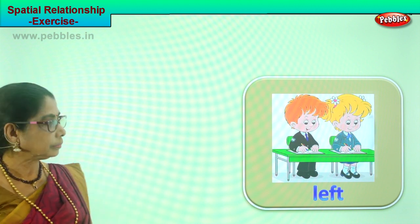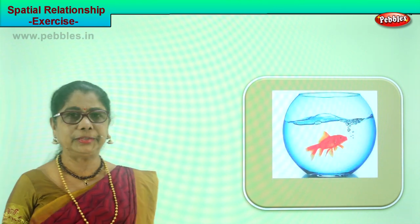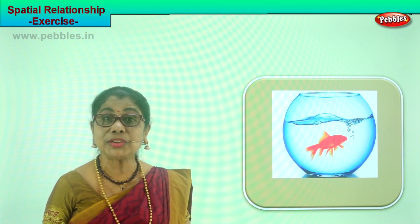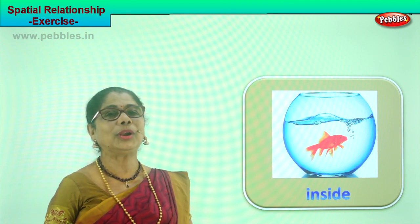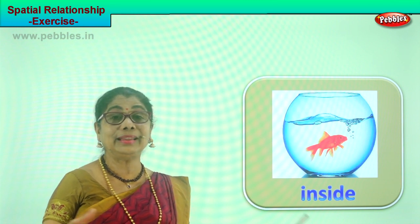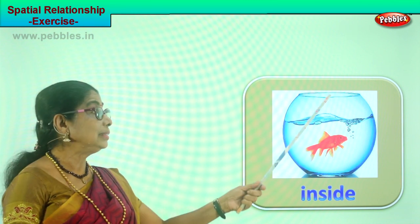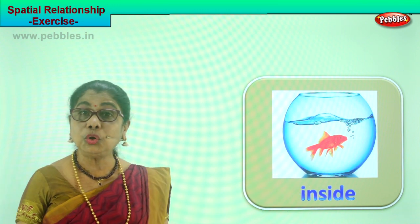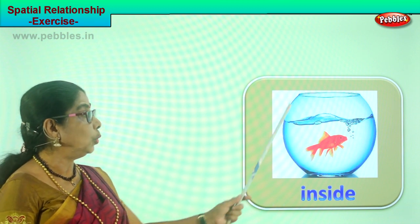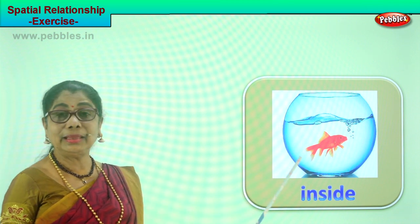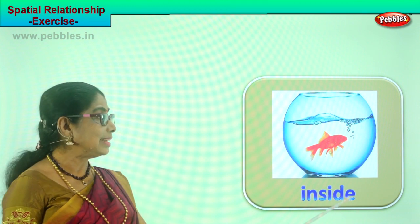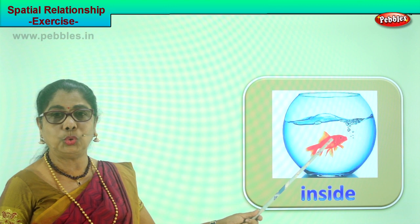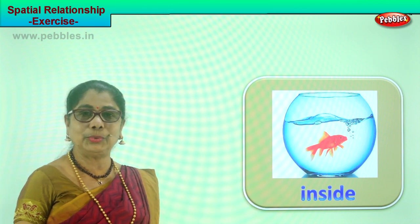Let's look at another picture. It's a bowl with a fish inside. What are we learning? Inside and outside. What is inside? Inside is a fish — a goldfish swimming about in a bowl, very happy, swimming all about. Where is the fish? Inside the bowl, in the water, inside the bowl.